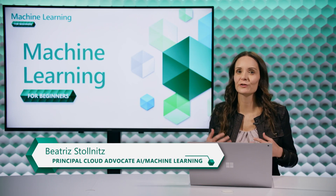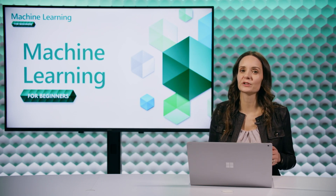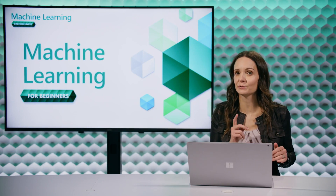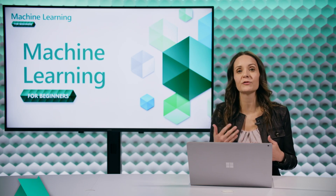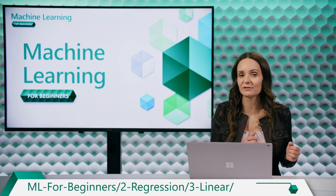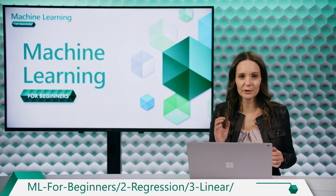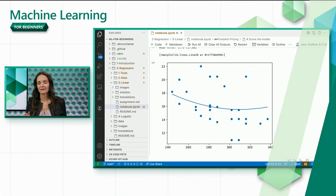In this video you're going to learn about categorical features: what they are, when to use them, and how to create them. We'll continue to add code to the notebook we used in the two previous videos, so make sure you watch those videos and run the code before moving on. You can find the notebook in the GitHub project associated with this video series by opening the regression folder and then the linear folder.